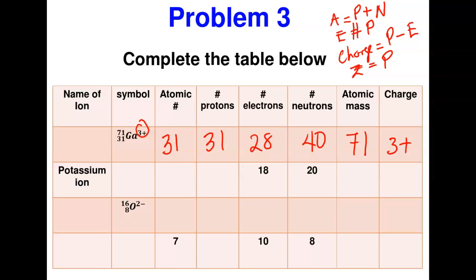To name a metal cation, you use the full name of the element followed by 'ion.' So this is the gallium ion.